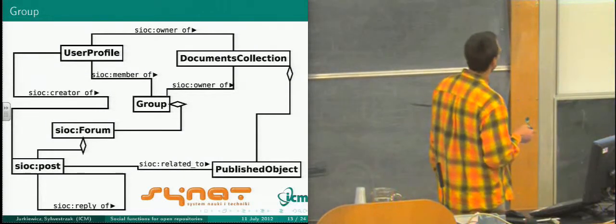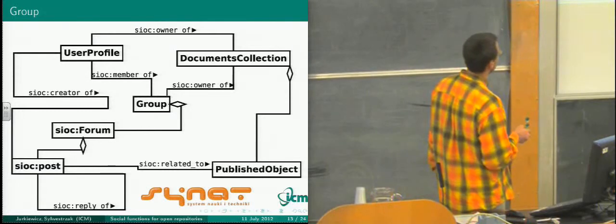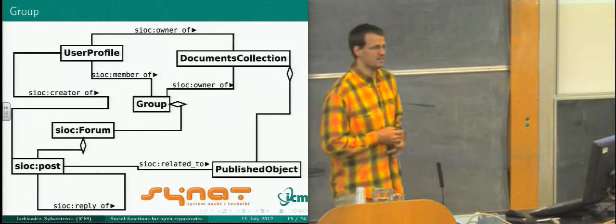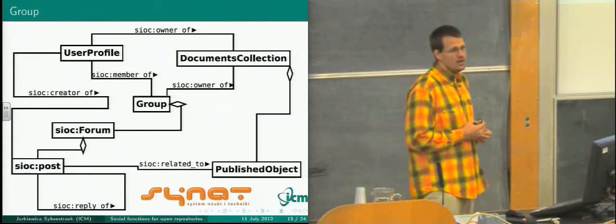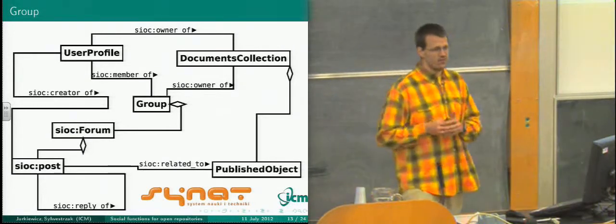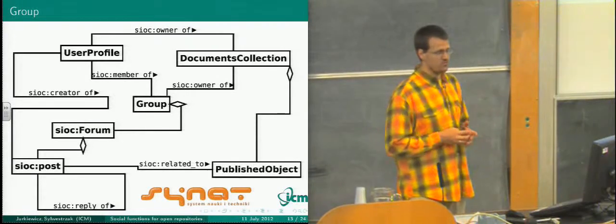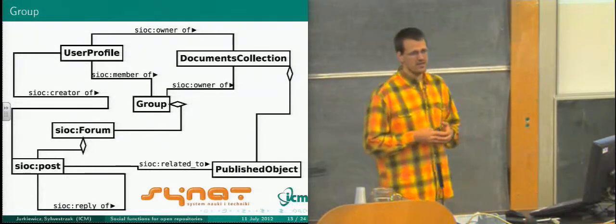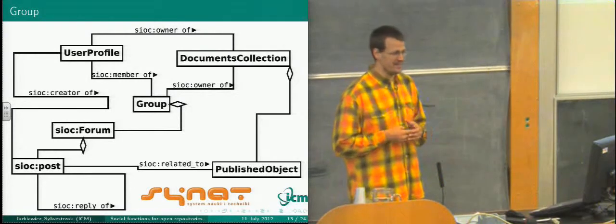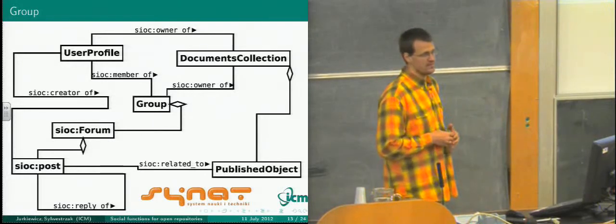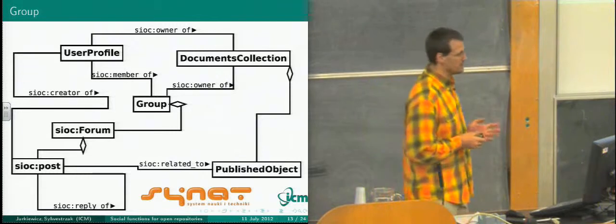A group could have a forum. On forums, there are posts. Posts can be replies to other posts, and posts can be related to one or more published objects — so a post could be a comment on a paper. Why use this portal rather than Facebook? Because this portal is for a community of scientists, comments would come from scientists. We can expect no stupid comments that usually come on public forums, and we would be able to do some filtering of users.